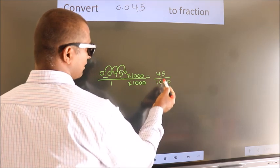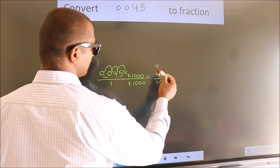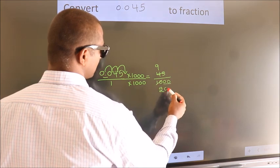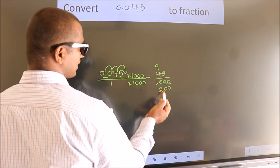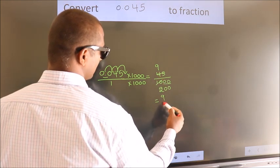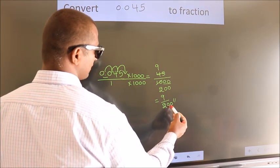I now cancel with 5. 5 into 45 is 9, 5 into 10 is 2, these 0s as is down. This cannot be simplified any further. So our fraction is 9 by 200.